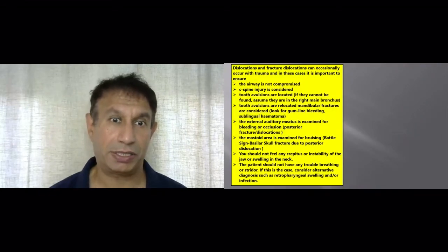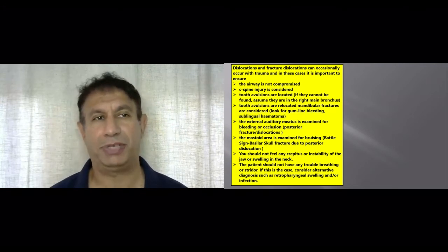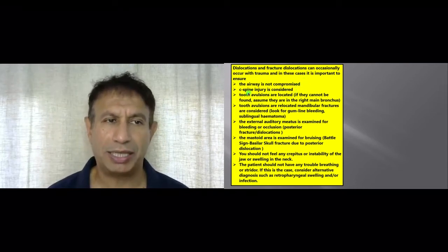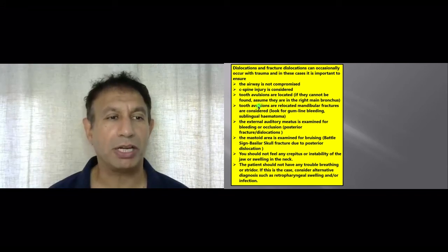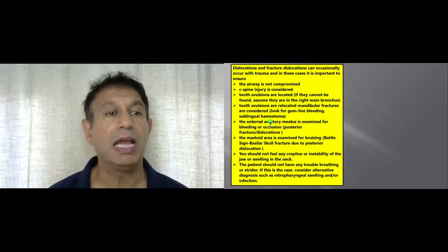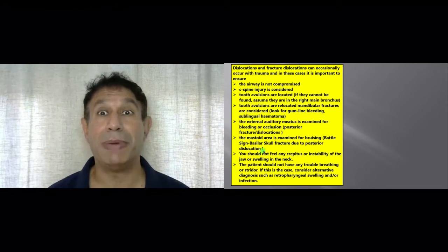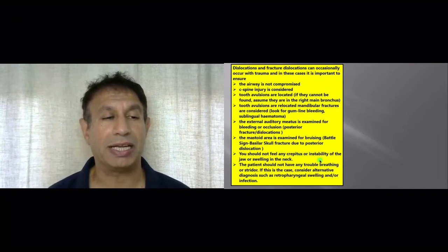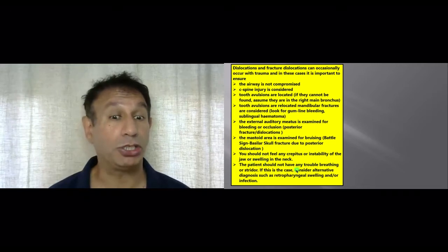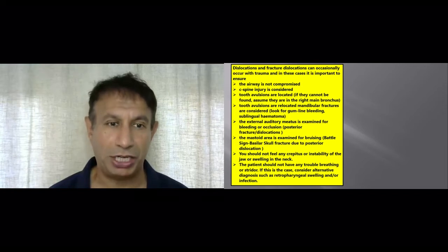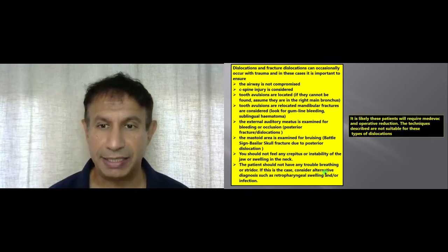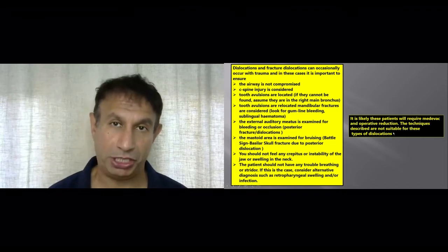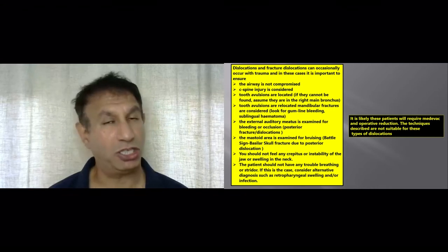Briefly, there are other types of dislocations to be aware of. In traumatic dislocations, you must check the airway, the c-spine, make sure there are no teeth knocked out or displaced, check for mandible fractures, check the ear for bleeding, and check the base of the skull for battle signs indicating a basilar skull fracture. You should not feel any crepitus, instability, or swelling of the neck. If any of these factors exist, the patient requires urgent medivac and an open reduction or operative procedure at a healthcare facility.